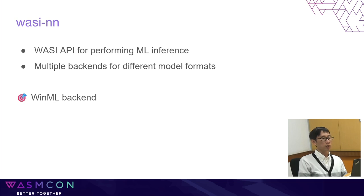For WCN runtime, OpenVINO was the first backend implemented. But in the past year, more backends were added as well, including ONNX Runtime, NML, and the newly added PyTorch backend. WCN is also supported by other WCN runtimes, like WCN Edge, that supports even more backends than WCN runtime.